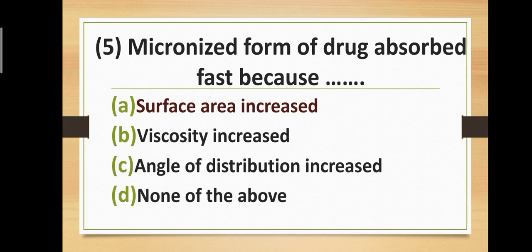Question number five: Micronized form of drug is absorbed faster because of — Option A: surface area increase. Option B: viscosity increase. Option C: angle of distribution increase. Option D: none of the above. The correct answer is option A — surface area increase. Micronized form of drug is absorbed faster because surface area increases.